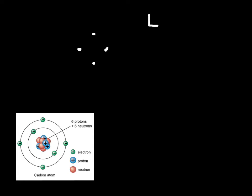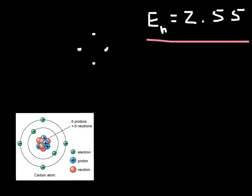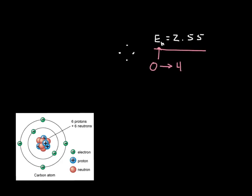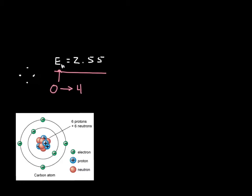Carbon's electronegativity value is around 2.55. Electronegativity typically runs from zero up to a maximum of around four, so carbon is pretty much middle of the road. This means that no matter what you combine carbon with, you're almost always going to get a covalent bond where electrons are shared.